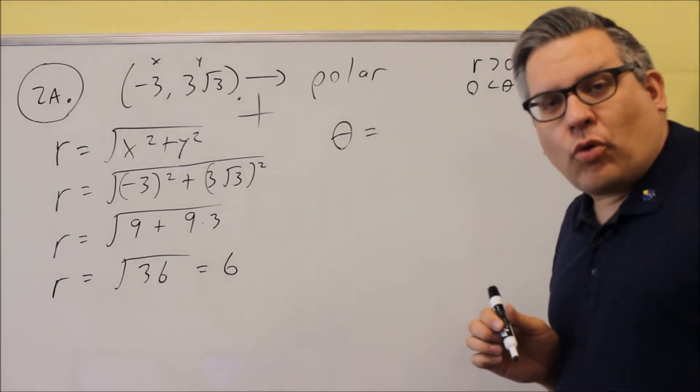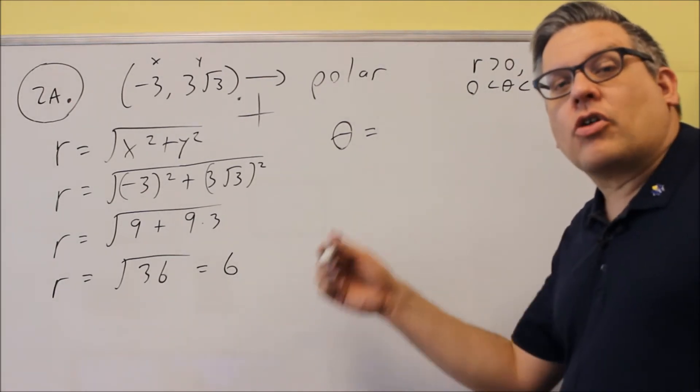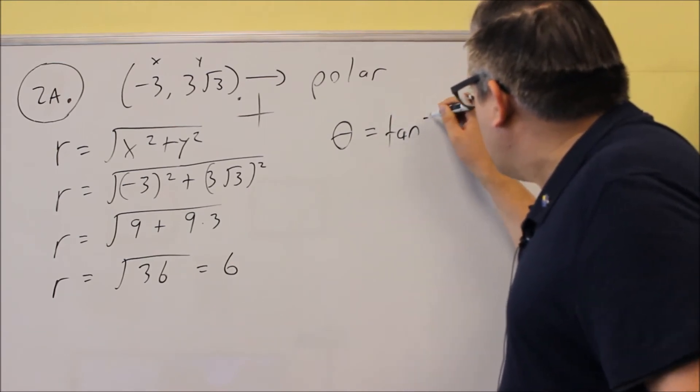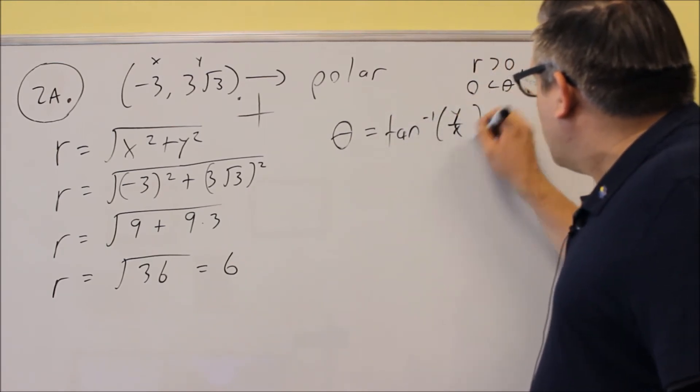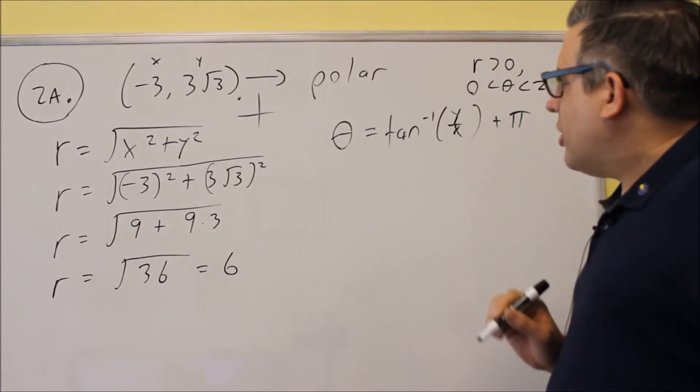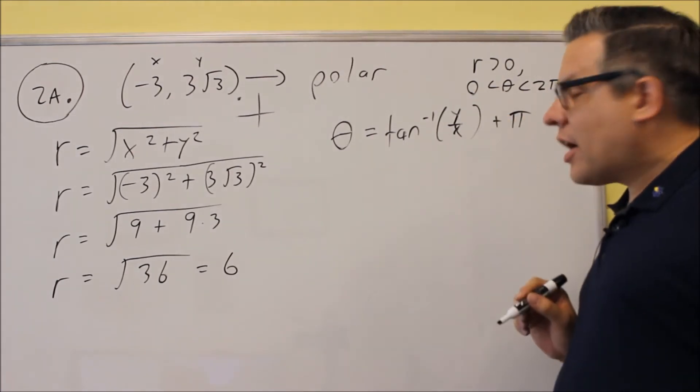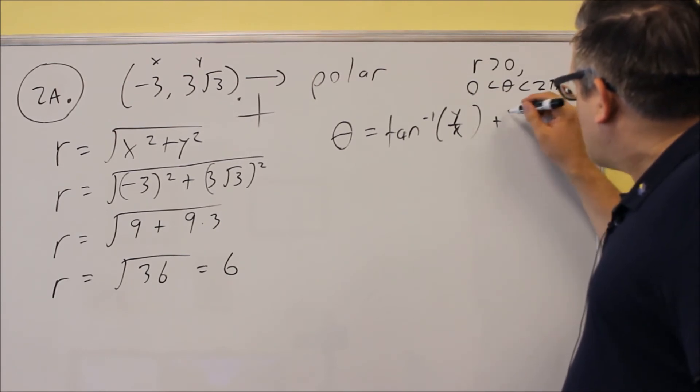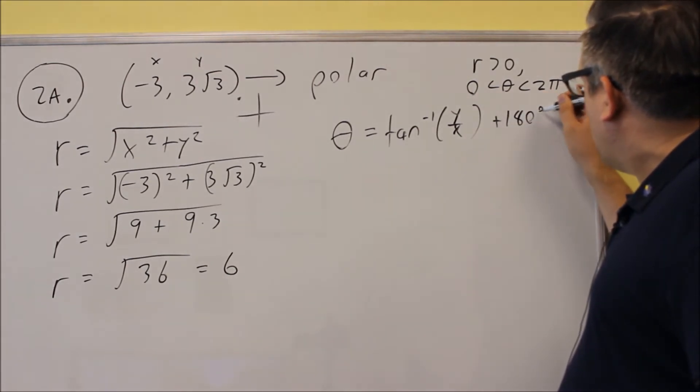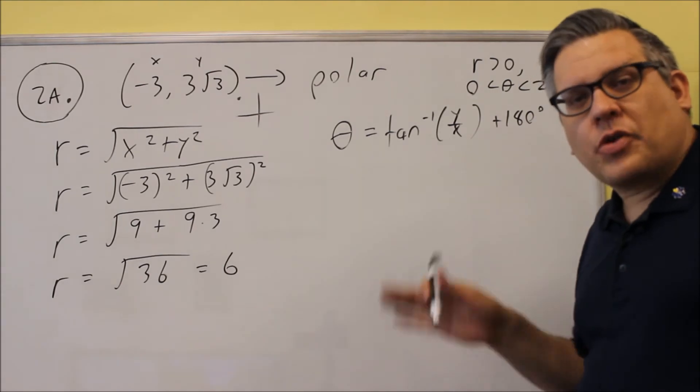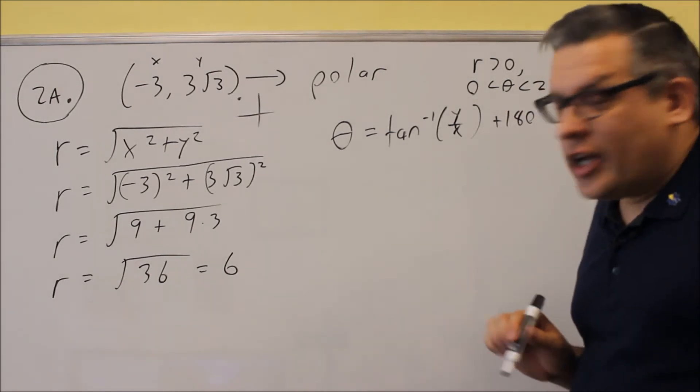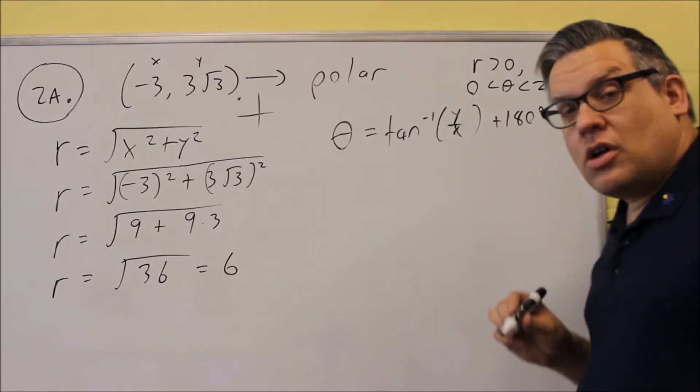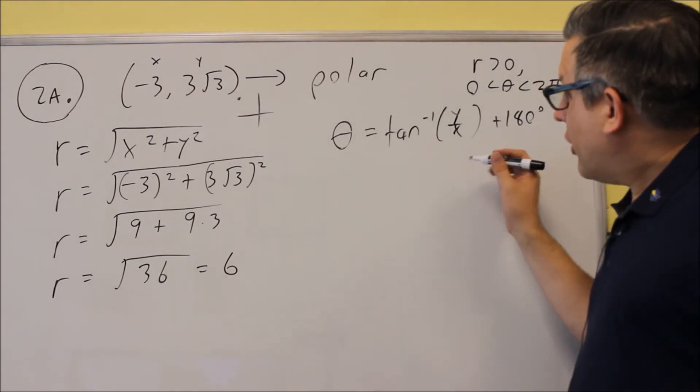The rule is if your point ends up in the second or third quadrant, that means you want to use this formula right here: inverse tangent Y over X plus pi. Now even though it's plus pi, I think it's better to work with degrees, so we can always convert our answer over into radians later. So I'm actually going to do this all in degrees first.